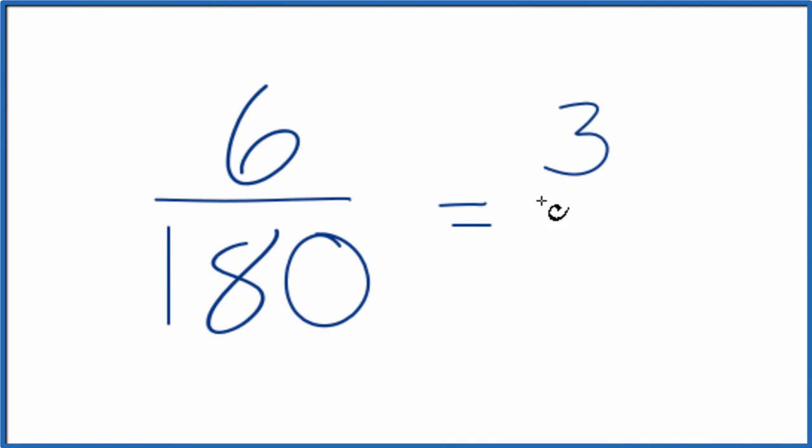6 divided by 2 is 3. 180 divided by 2, that's 90. This is a little bit easier to work with.